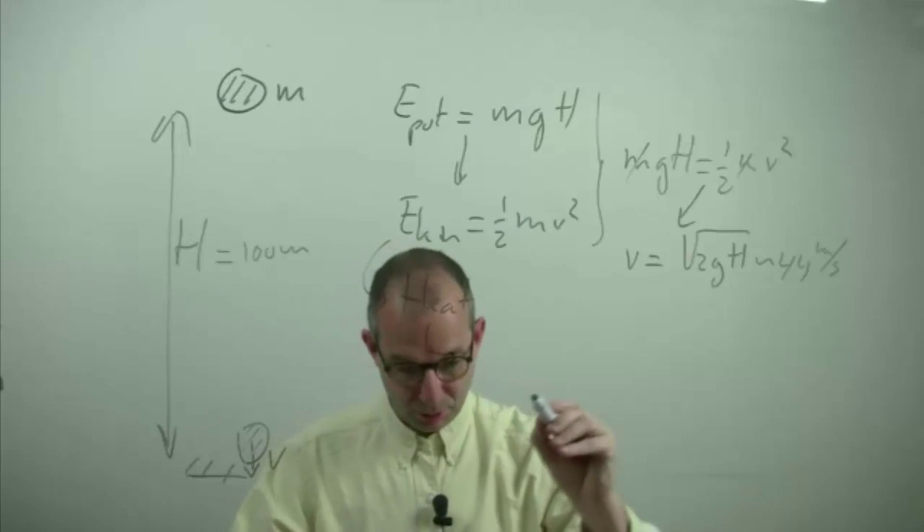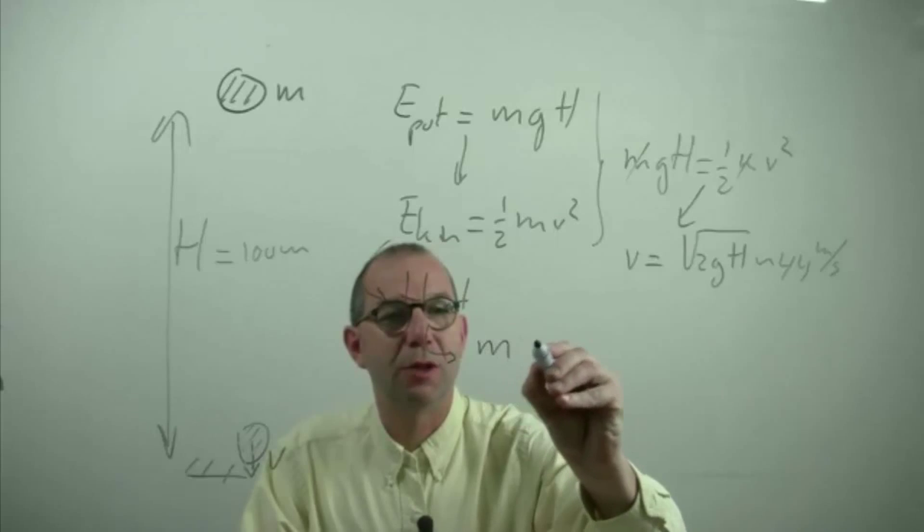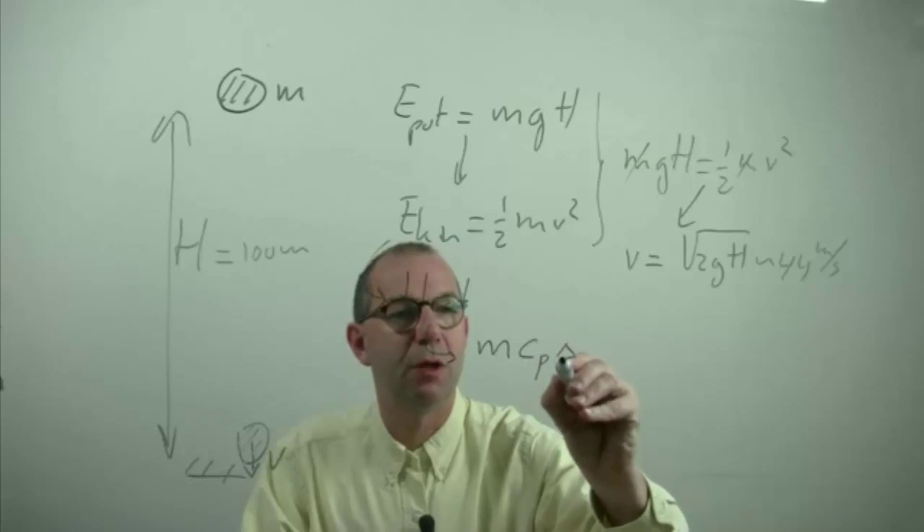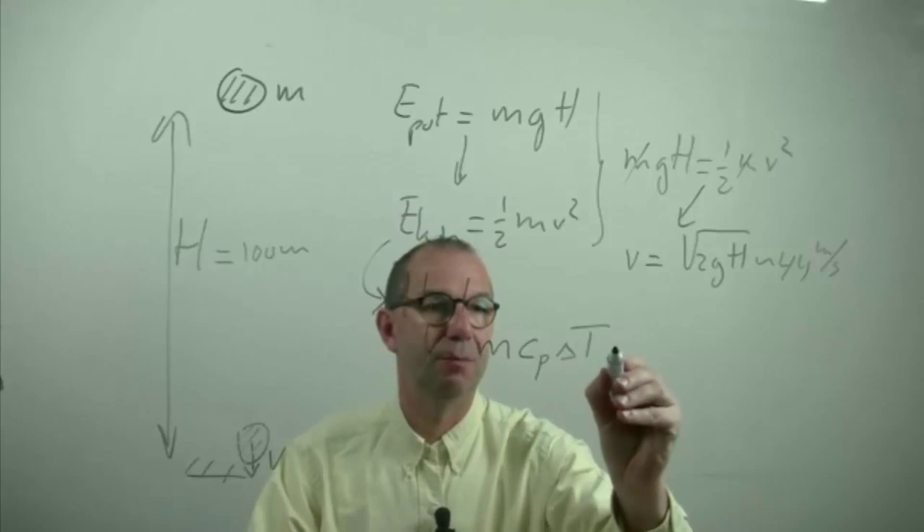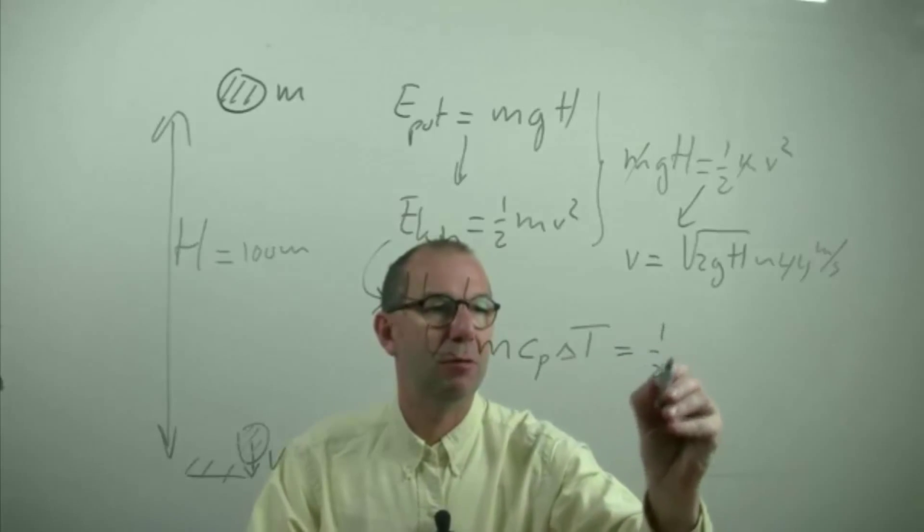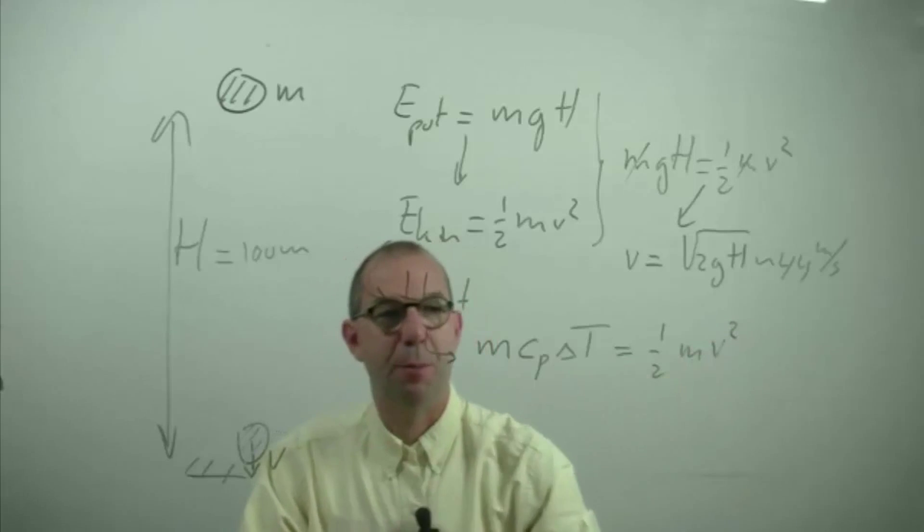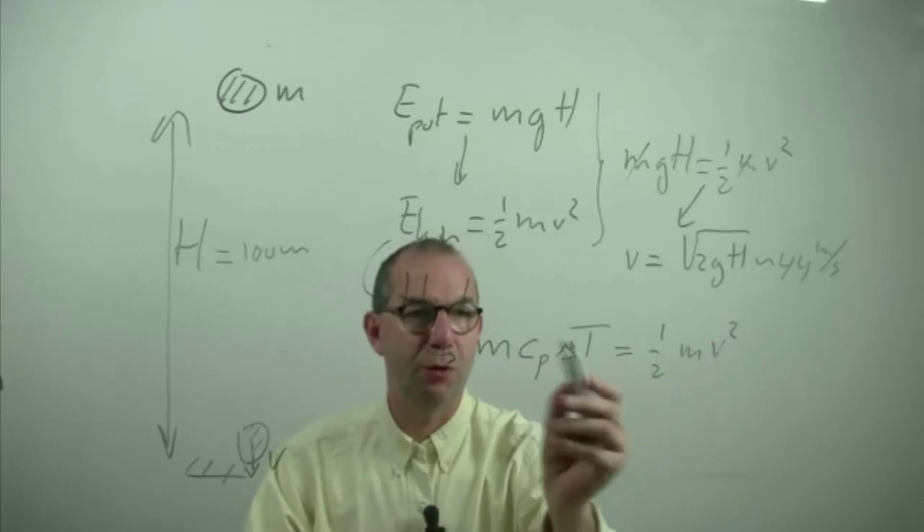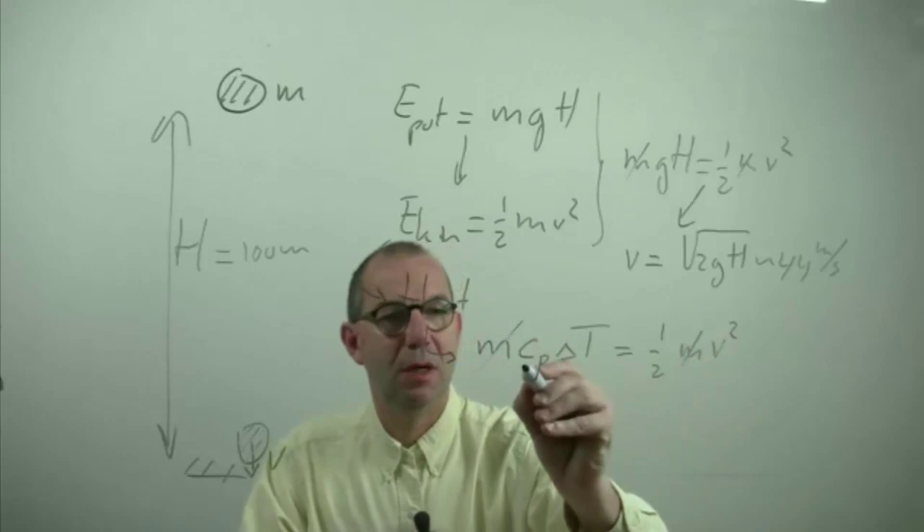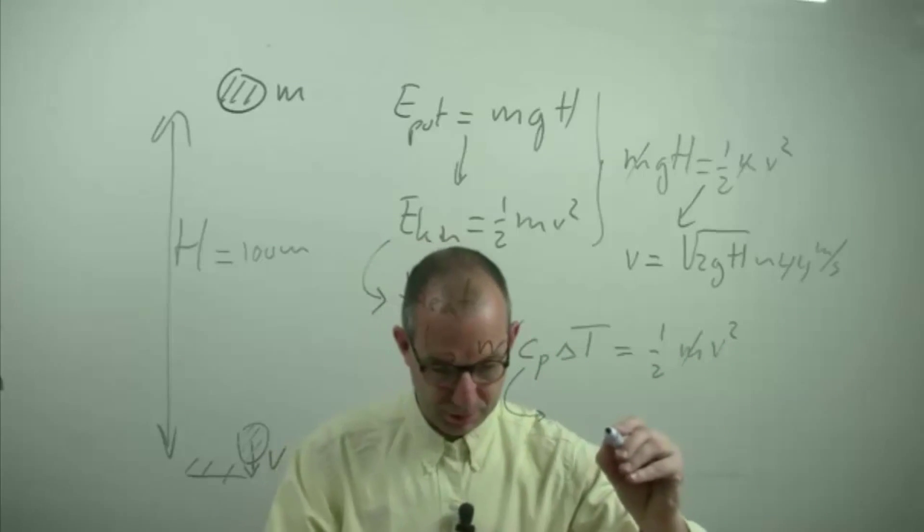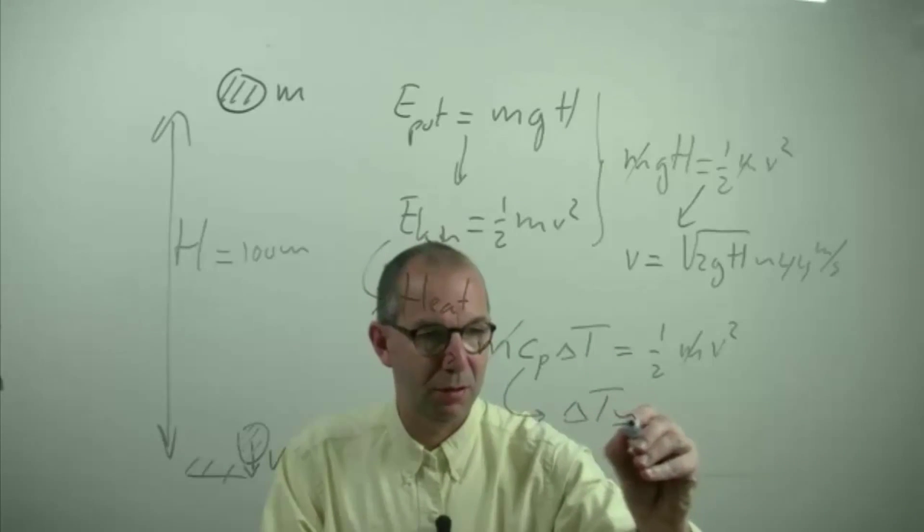Thus we say that all energy is now found in the form of internal energy, a change in the internal energy and the temperature will thus change. And that is equal to all the energy that the particle had upon the impact, so all the kinetic energy is converted into heat. Again we can scratch out the mass and delta T is about V squared over 2Cp.